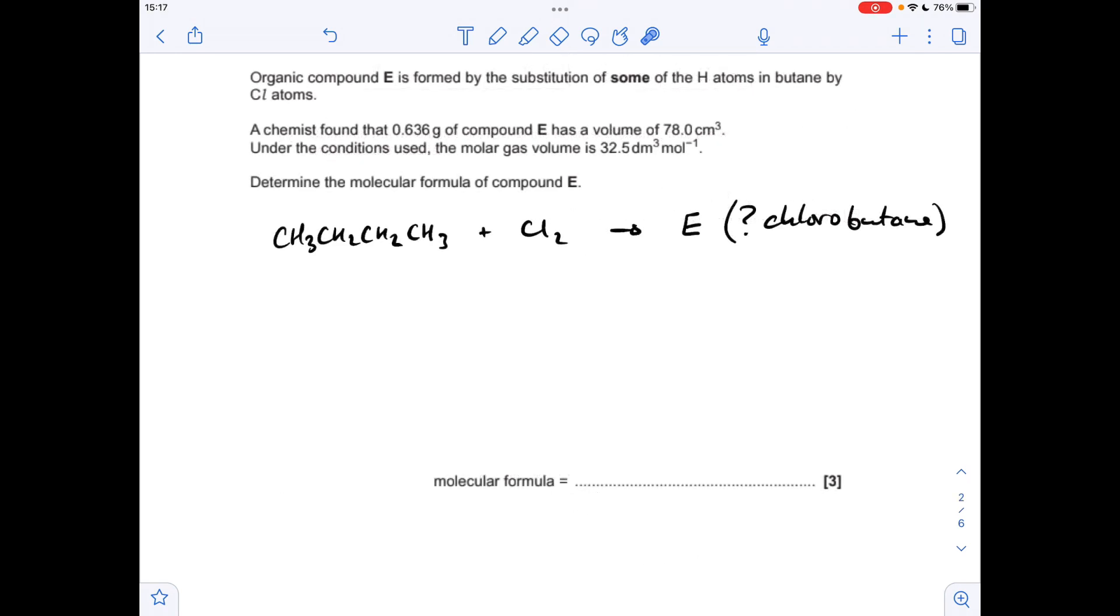Moving on to the next question, we've got butane and chlorine reacting together. Some of the hydrogens in the butane have been replaced by chlorine and made compound E. The only thing we need to work out is its MR so we can work out how many chlorines are actually on those four carbons of the butane skeleton.